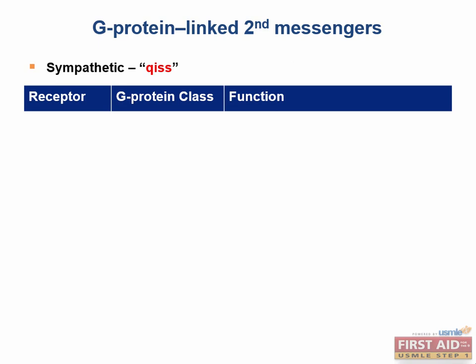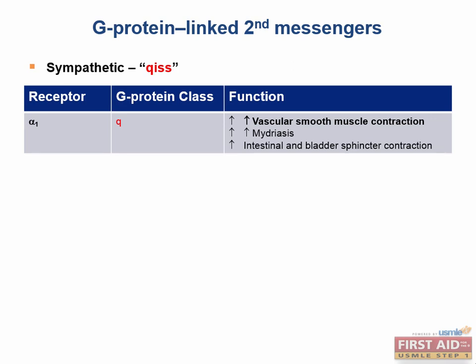The sympathetic second messengers will include the alpha and beta receptors. The alpha-1 receptor is of the G-sub-Q class, and alpha-1 receptors mediate the majority of functions for the sympathetic nervous system. This includes vascular smooth muscle contraction, pupillary dilator muscle contraction (also called mydriasis), and intestinal and bladder sphincter muscle contraction. When you think of alpha-1 receptors, think vessel constriction, which causes an increase in blood pressure.